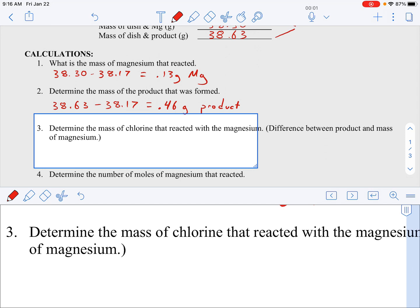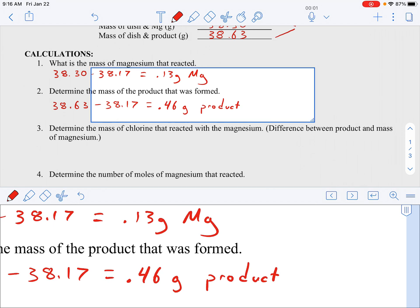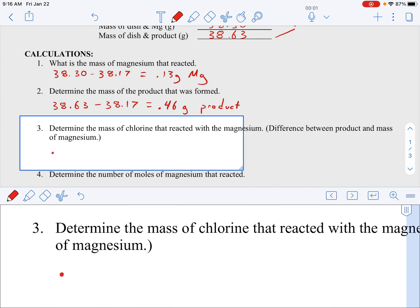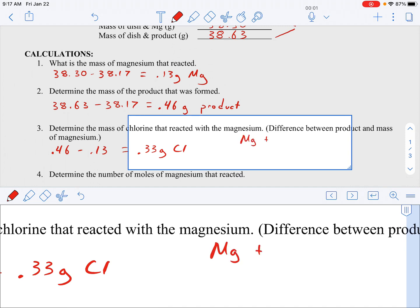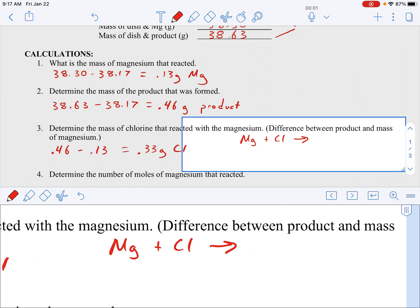Our next question: determine the mass of chlorine that reacted with the magnesium. So it says there in parentheses difference between the product and the mass of magnesium. So we made a product, 0.46 grams, and used 0.13 grams magnesium. Well, where did the other reactant come from? Well, that must be the chlorine. So 0.46 product minus the 0.13 magnesium equals 0.33 grams of chlorine. The reaction is magnesium plus chlorine equaling magnesium chloride. And this X is what we're trying to figure out, that ratio of magnesium to chlorine.